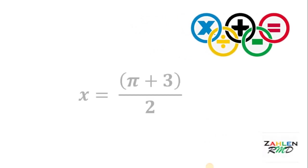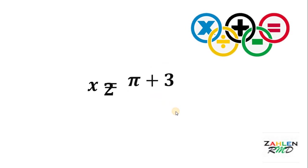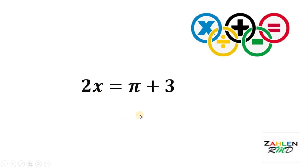Let's start with this equation. We have x equals pi plus 3, all over 2. The first step is to multiply both sides by 2. If we do that, we get 2x equals pi plus 3.